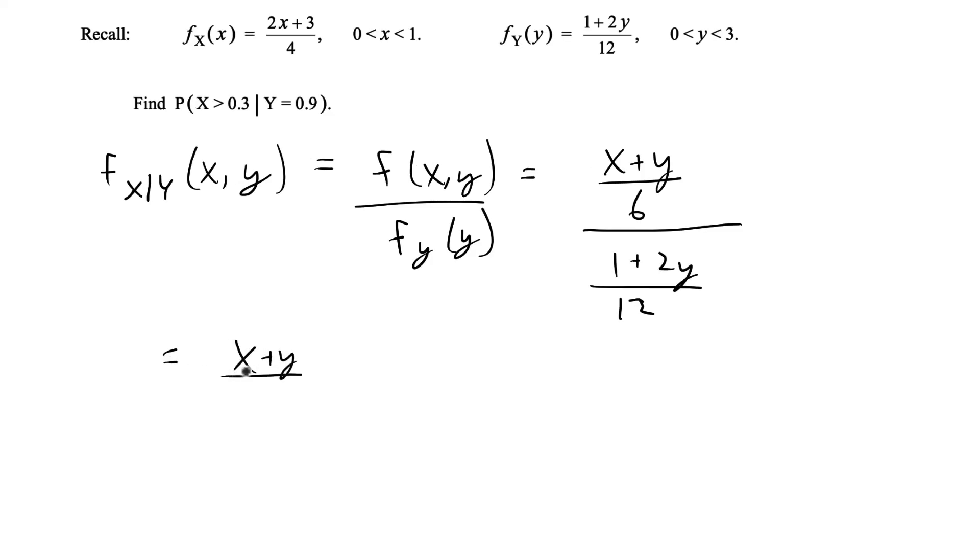To divide this, I'm just going to flip the denominator. That's going to be x plus y over 6 times 12 over 1 plus 2y. This is going to give me 2 at the top. That's just going to be equal to 2x plus 2y over 1 plus 2y.